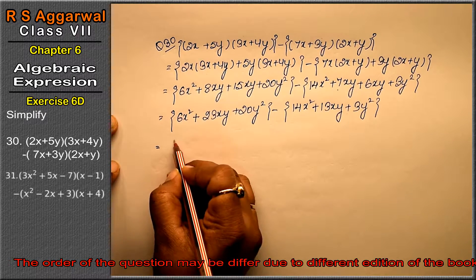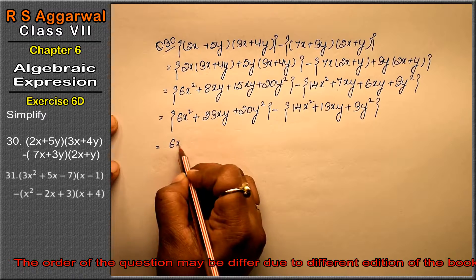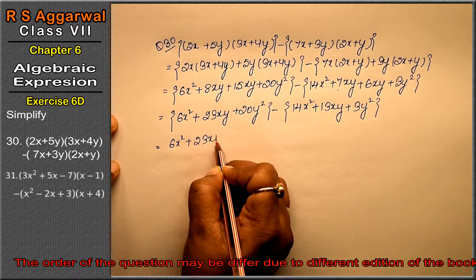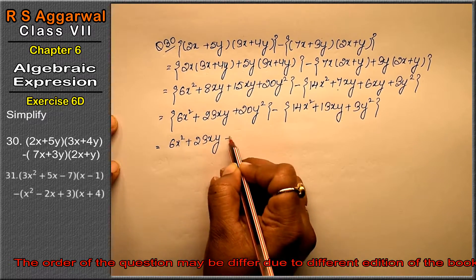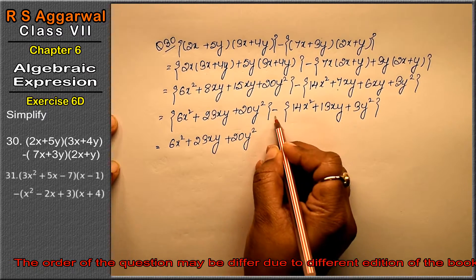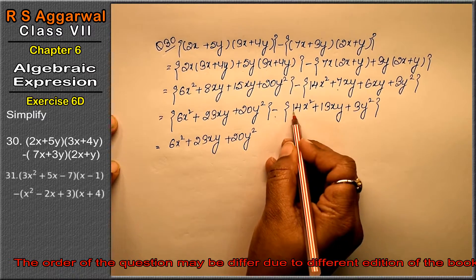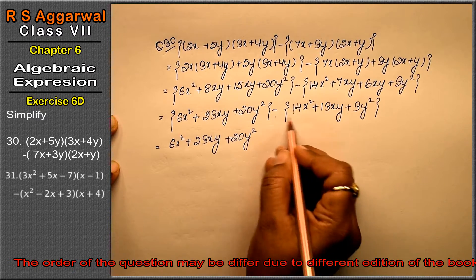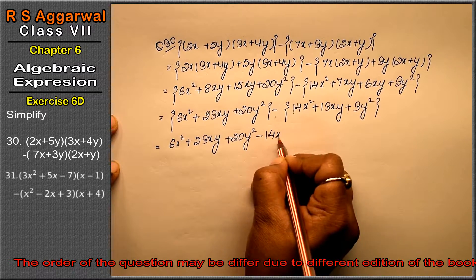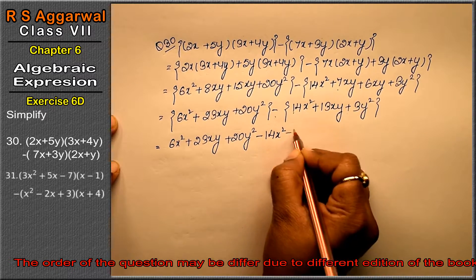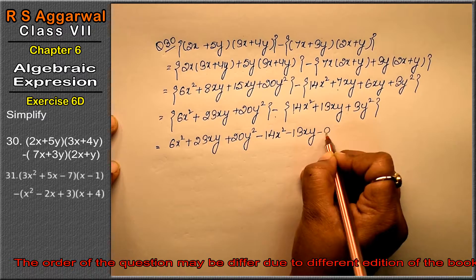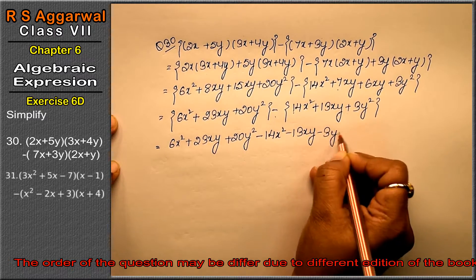So let's see what we have now. Opening the brackets: 6x square plus 23xy plus 20y square. There is a minus outside, so all signs will change — minus 14x square minus 13xy minus 3y square.